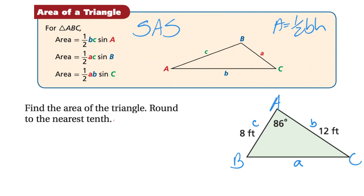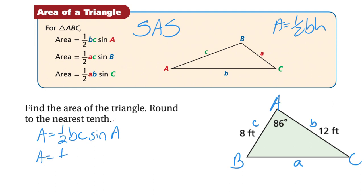These three formulas are all exactly the same thing — just showing different combinations depending on which sides you know. Essentially, if you know an angle and the two sides connected to that angle, that's what the formula uses. Down here I have angle A and the two sides connected to it, so I'll use that first setup. I'm going to plug in all the pieces: one half times b, labeled 12, times c, labeled 8, times sine A, which is 86 degrees.